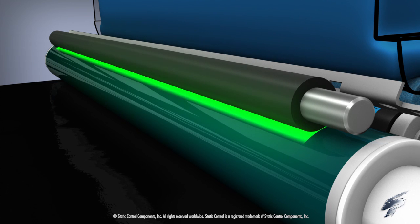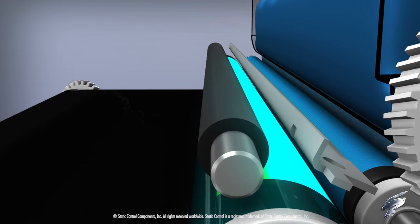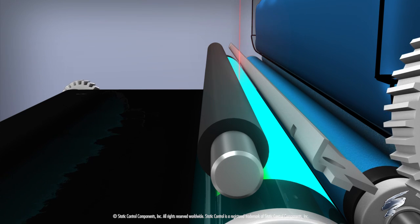The primary charge roller, or PCR, rotates next to the OPC drum and applies a negative charge to the surface of the OPC drum, which prepares it for the imaging process.